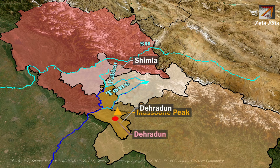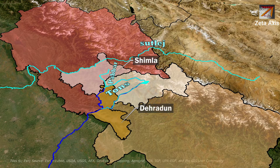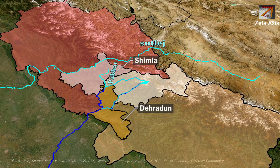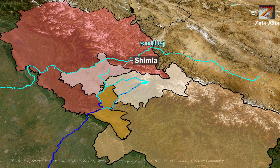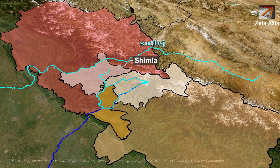The Sutlej river is the next watershed over and is the easternmost river that drains west into the Indus. After the confluence of Pabba and Tons, the Tons river flows downhill along the boundary of Himachal Pradesh and Uttarakhand, and in Dehradun valley, the Tons river meets the Yamuna river.